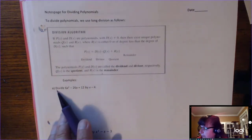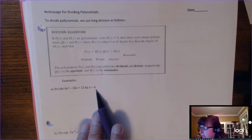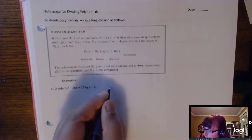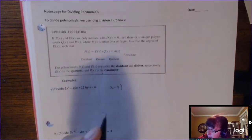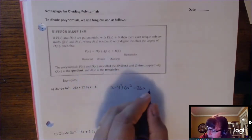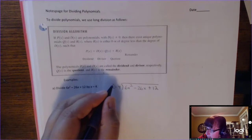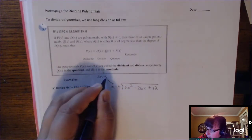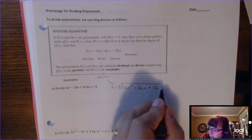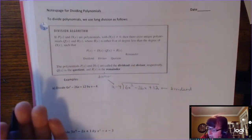If you want to divide 6x squared minus 26x plus 12 by x minus 4, you're going to make sure these are in descending order. Put x minus 4 outside the box and 6x squared minus 26x plus 12 inside the box. The x minus 4 is the divisor — that's D of X. The 6x squared minus 26x plus 12 is called the dividend — that's P of X, the beginning polynomial.